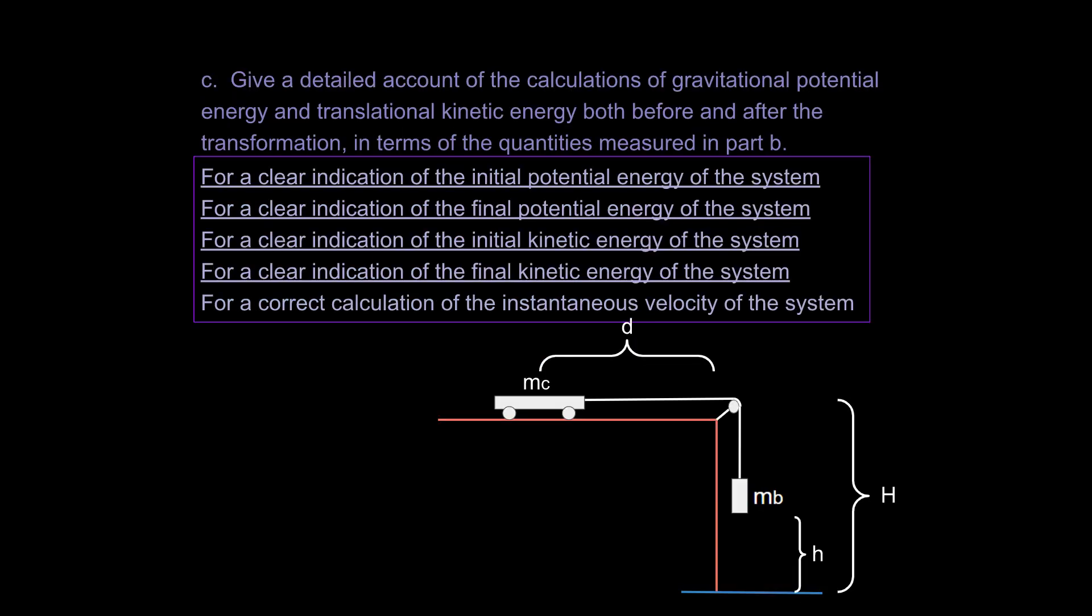And so let's take a look at C. So it says, give a detailed account of the calculations of gravitational potential energy and translational kinetic energy, both before and after the transformation in terms of the quantities measured in part B. So for this one right here, if we're doing the pulley system version of this, we could have our setup right here. Four points for this. So there are a lot of points right here. So for your initial potential energy of the system, we would have your potential energy for the system is the potential energy of this cart plus the potential energy of this object over here. Your final potential energy, we're going to assume this thing goes down and hits the ground. Your initial kinetic energy for the entire system is going to be zero.